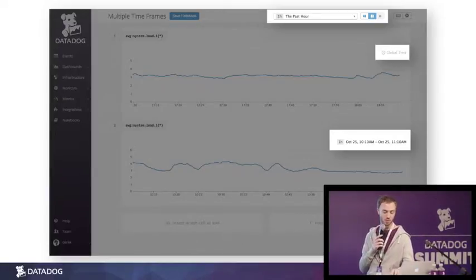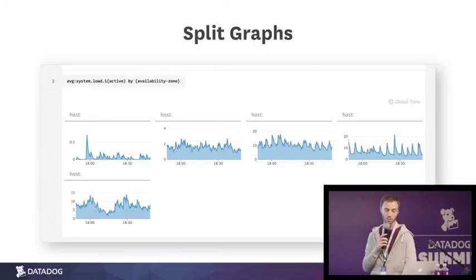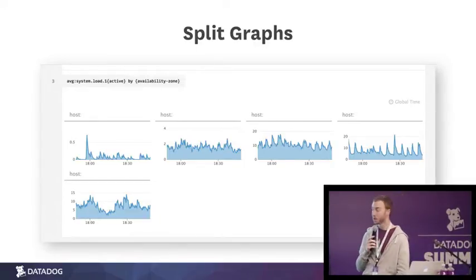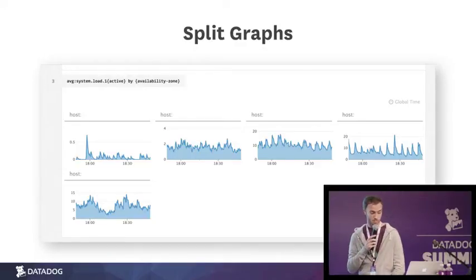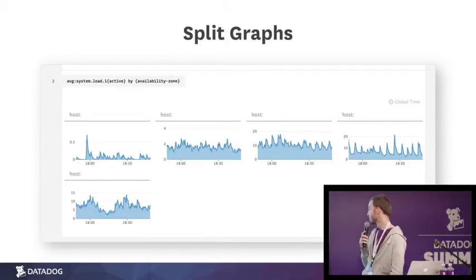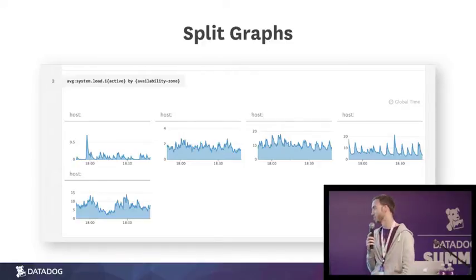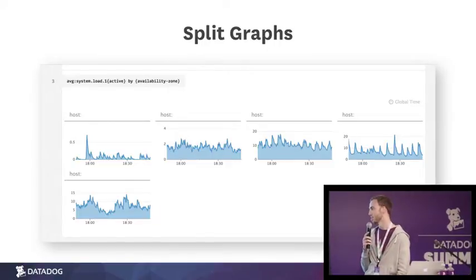Like in the current Metric Explorer, Notebooks let you easily create multiple graphs for a single metric. Here we see this metric averaged by availability zone and split by host, so there are five host graphs. We have controls that allow you to change the size of these graphs, turn legends on or off, et cetera. They're pretty easy to figure out once you play around with Notebooks for a little while.